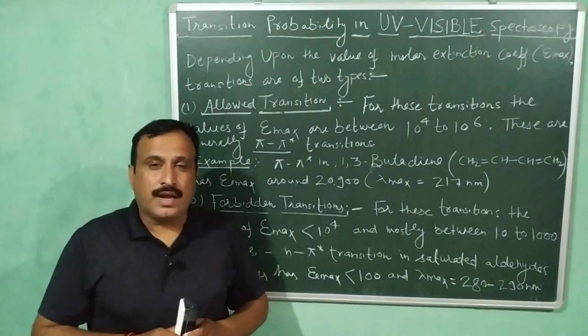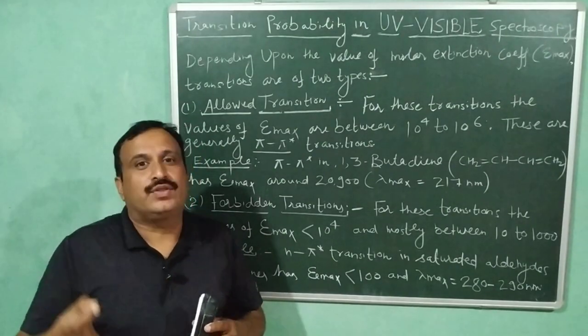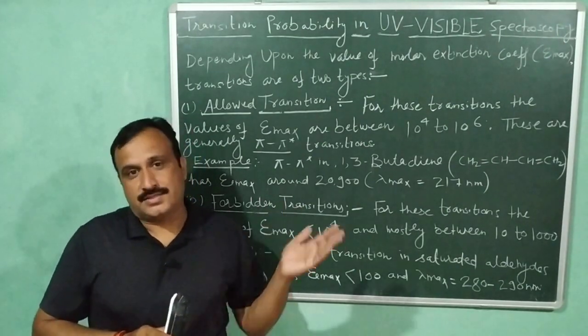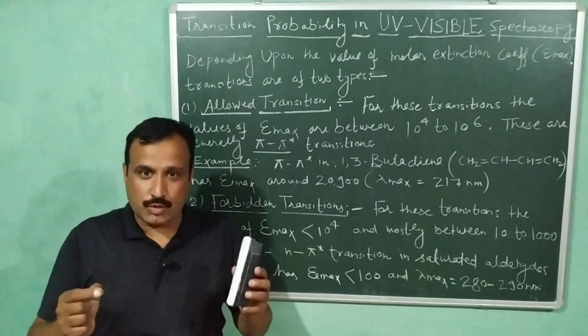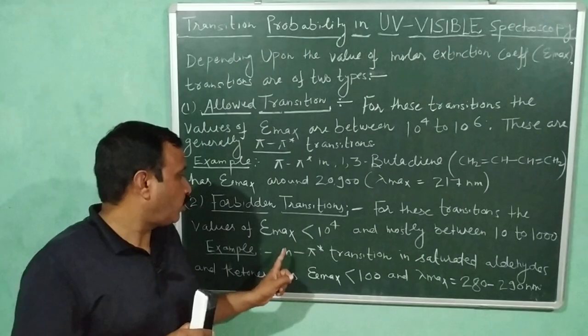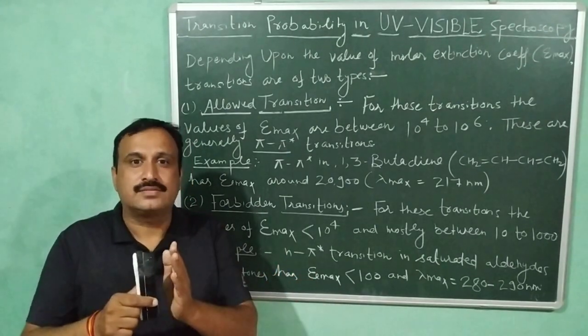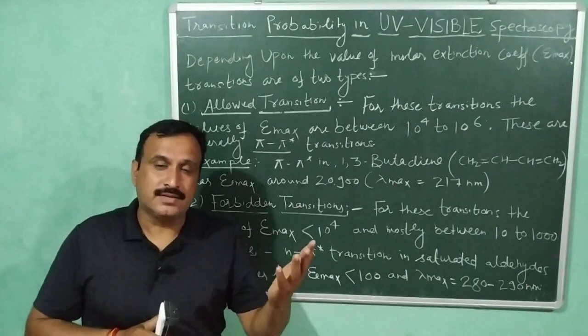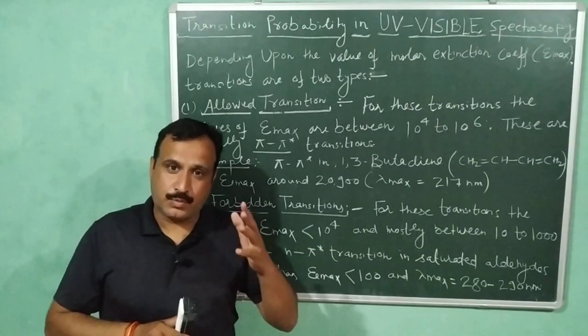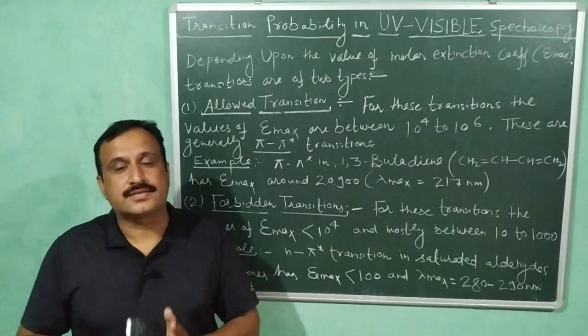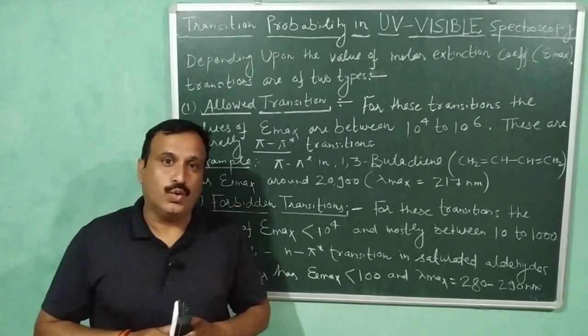These transitions occur due to the twisting of the molecule in the excited state. During that twisting, the orbitals involved—that is non-bonding orbitals and π* antibonding molecular orbital—they come in same plane to some extent and overlap. But the probability and the molar extinction coefficient of these transitions is still very low.